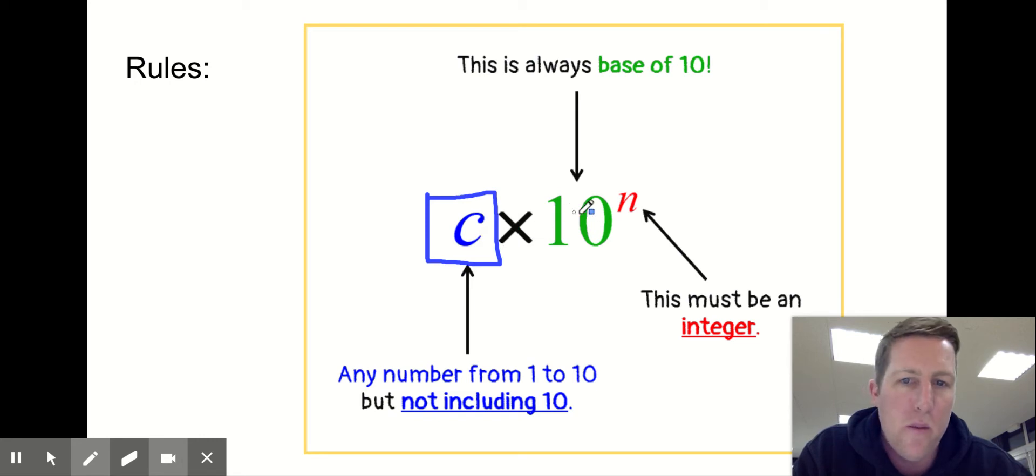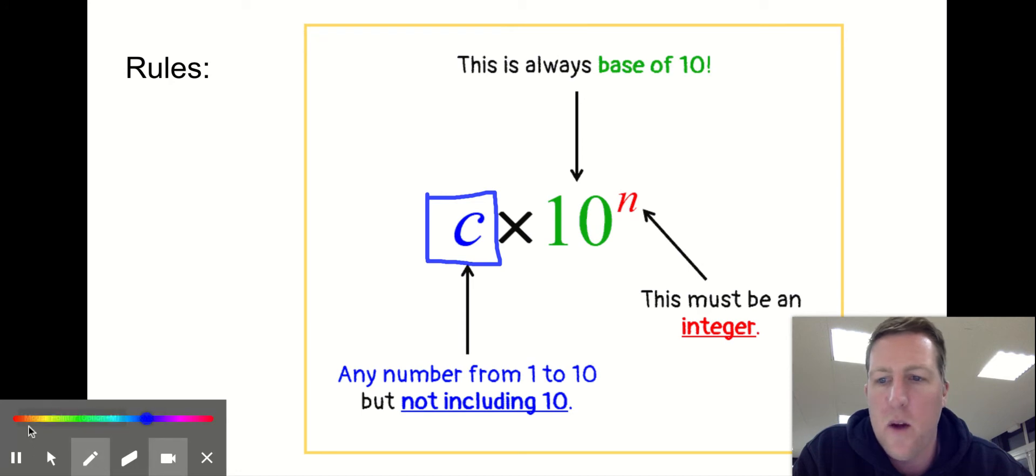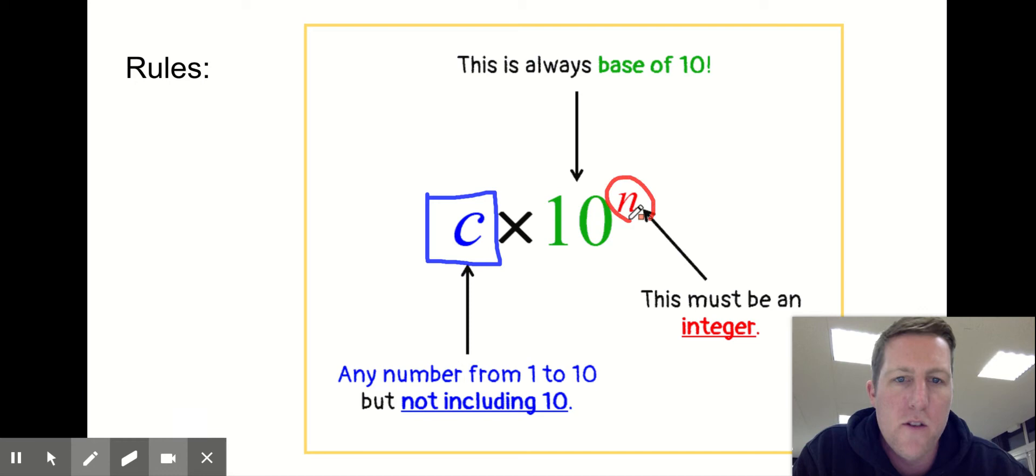Then we always write times 10, and then to the power of something. The power is related to the number that you're given in the question, and we're going to talk about that again. But these are the basic rules for scientific notation.